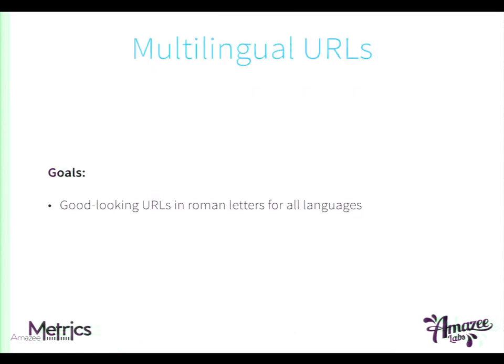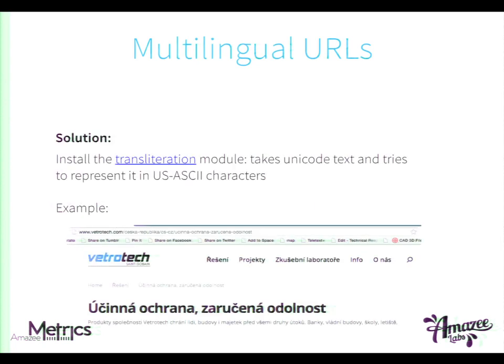Another topic is multilingual URLs, which is also a big topic. They should also look good with Roman letters. For this, you use the Transliteration module, which takes Unicode text and represents it in US ASCII codes. You can see a nice example: a node title with a lot of special characters, but they don't appear in the URL.